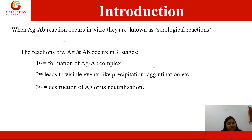An antigen is a foreign substance, or we can say specific carbohydrate sequences, which are present on the surface of the RBCs. The antibodies are present in the plasma. First, there is a formation of an antigen-antibody complex, which then leads to a visible event like precipitation or agglutination.